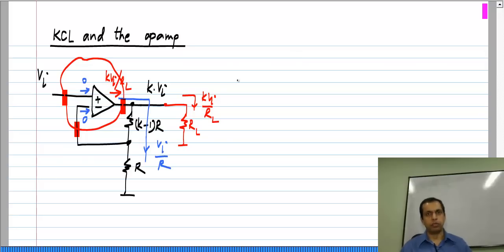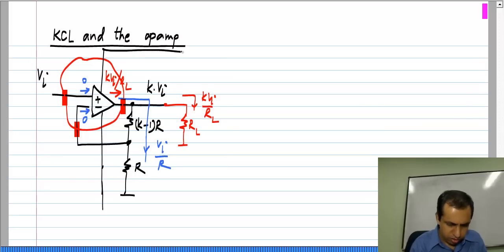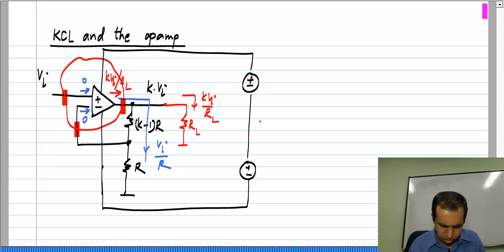In this picture, as in most op amp pictures, we have omitted the power supply connections. So if we do include the power supply connections, this is Vdd and this is Vss.